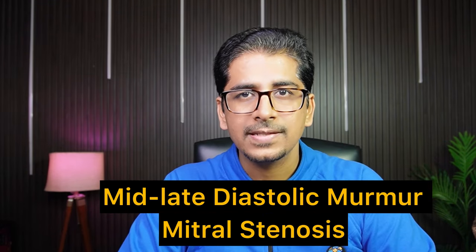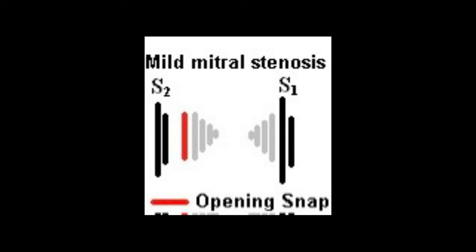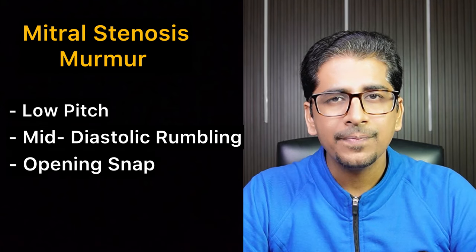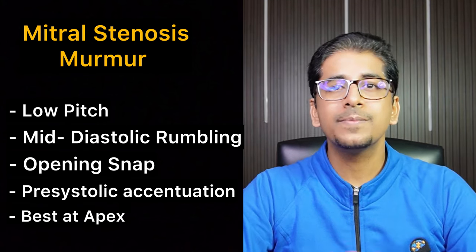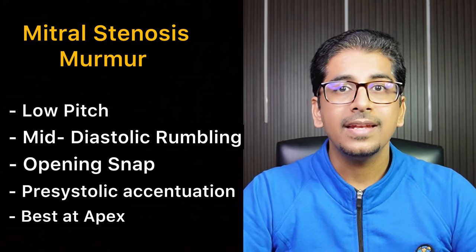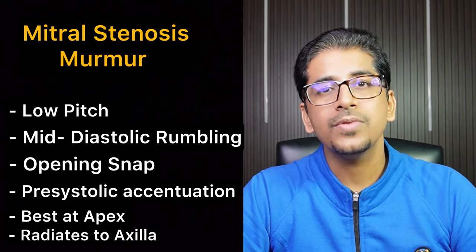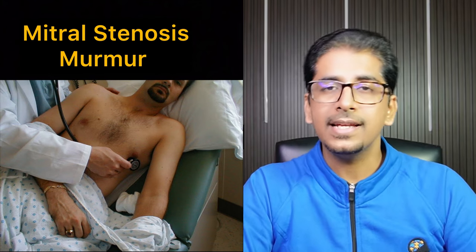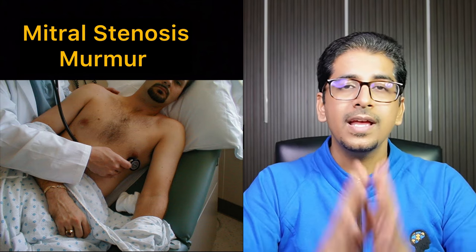The mid-to-late diastolic murmur example is mitral stenosis. Listen to how it sounds. It is a low-pitched, mid-diastolic rumbling murmur, with an opening snap and pre-systolic accentuation. It is best heard at the apical or mitral area, and it radiates to the axilla — so always auscultate the axilla. To auscultate it optimally, ask the patient to adopt the left lateral tilt position and use the bell of the stethoscope.